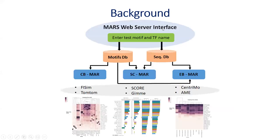This is an overview of the tool. We have the front end here for the web server whereby the end user puts in the transcription factor name or motifs if they have them. And here we have the back end which contains the motifs for the given transcription factor and a benchmark dataset. It employs three tools: the consistency-based MASS, the scoring and classification-based MASS, and the enrichment-based MASS. These different tools have different algorithms used for different evaluations.